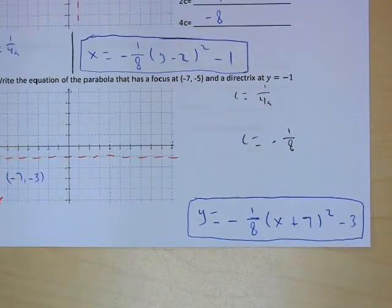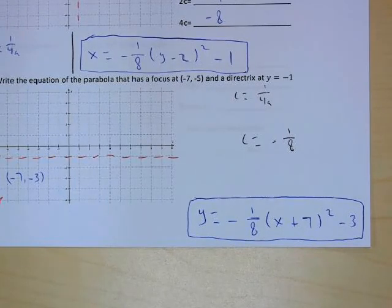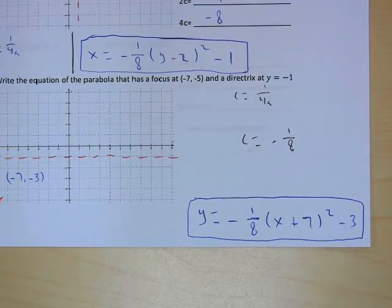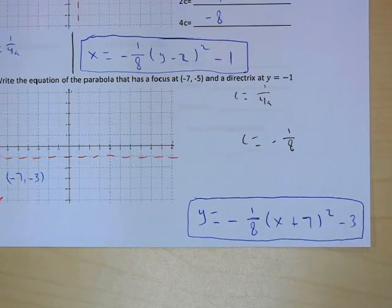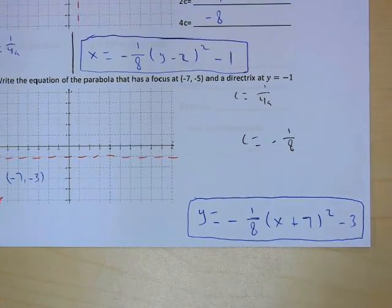That's it for Section 7.5. Very similar to 7.4 — the only difference is we're moving the vertex away from the origin. Just be careful placing things in the right spot. If you have any questions, please let me know in class.